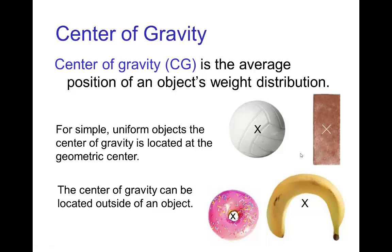For more complicated objects, it would be some average position. And in fact, the center of gravity can even be outside of the object. Like with a donut, it would be in the center of the hole. This curved banana, it's somewhere inside the curve.